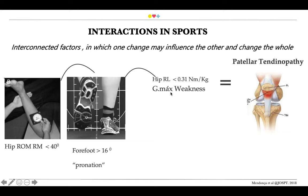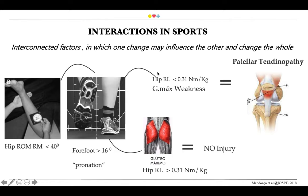On the other hand, when we have good gluteal maximus strength, it will neutralize the foot malalignment and hip malalignment, and then no injury will happen. It's also interesting to see that sometimes we make a linear inference related to injury — thinking that forefoot malalignment or pronation will lead directly to patellar tendinopathy. This is the wrong way to think, because biomechanical risk factors and contextual risk factors can interact and then change our outcome.